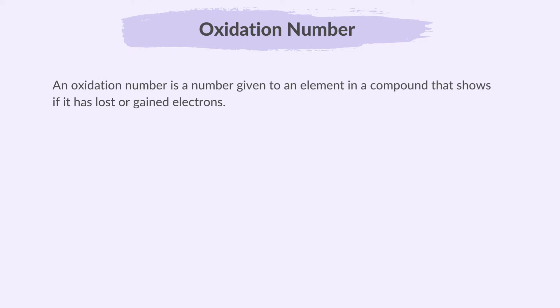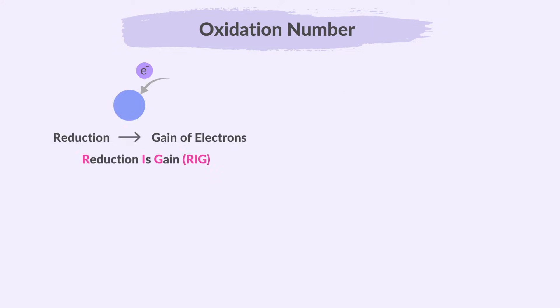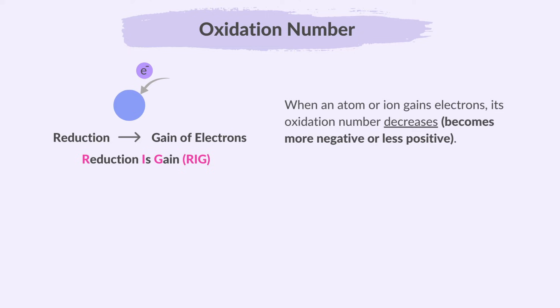An oxidation number is a number given to an element in a compound that shows if it has lost or gained electrons. It helps us figure out how electrons move in chemical reactions. Roman numerals are used to indicate the oxidation number of an element in a compound — the Roman numeral is placed right after the element's name. Sometimes it may be confusing why reduction means gaining electrons, especially since the word reduction might remind you of the word reduce. When an atom or ion gains electrons, its oxidation number decreases — that is, it becomes more negative or less positive.